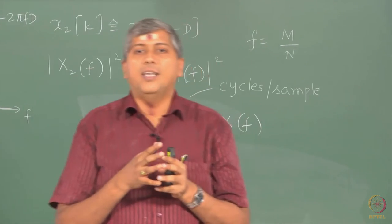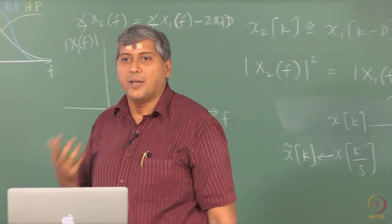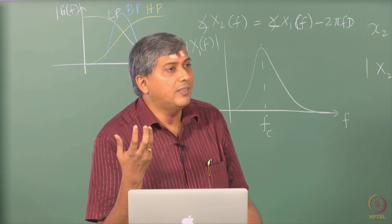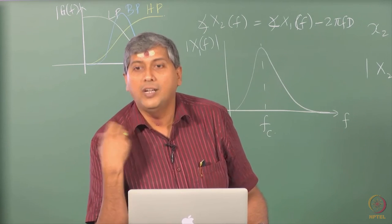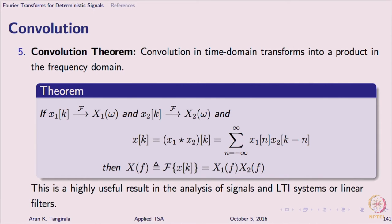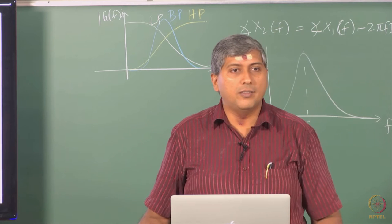Almost all routines in all software packages, even MATLAB, implement convolution using this property. But the use of this property is a lot more important particularly in theoretical analysis of linear time invariant systems. We have used this property to understand what the LTI system does to an input in the frequency domain — it gives us insights into filtering characteristics. When I look at this result in the context of LTI systems, I can think of x2 as the impulse response and x1 as the input, and x as the output. This tells me that the LTI system is altering the frequency content of the input, and what is responsible for that is G(f). Plotting |G(f)| versus f gives a lot of valuable information about the filtering nature of the system.